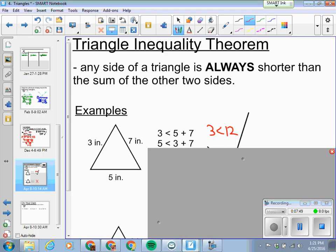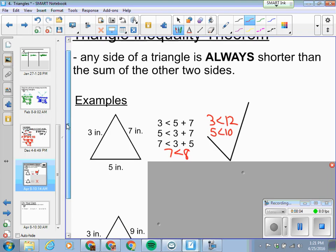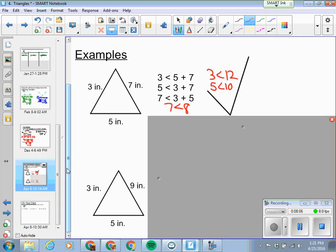So for example, we have this triangle right here: 3, 5, 7. So what we're going to do is test all the sides. Is 3 less than 5 plus 7? Well, 5 plus 7 is 12. So is 3 less than 12? It sure is.